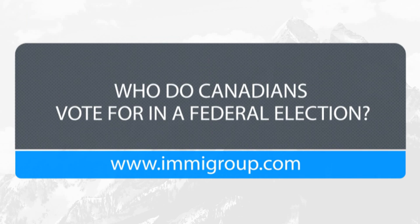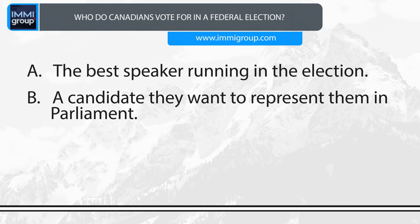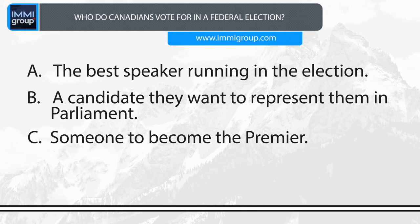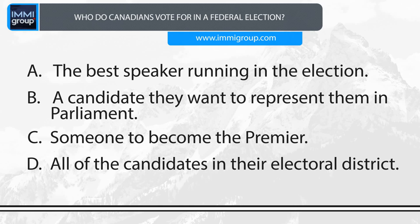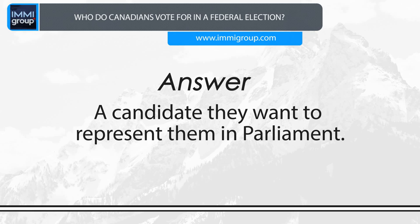Who do Canadians vote for in a federal election? A. The best speaker running in the election. B. A candidate they want to represent them in Parliament. C. Someone to become the Premier. D. All of the candidates in their electoral district. Answer: A candidate they want to represent them in Parliament.